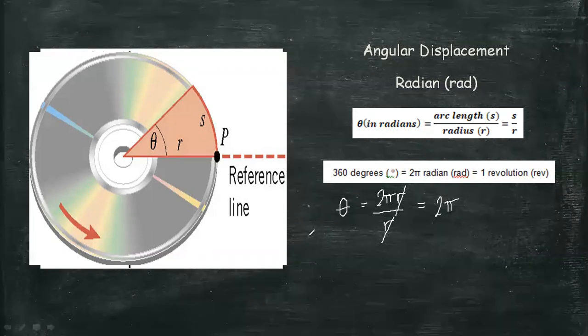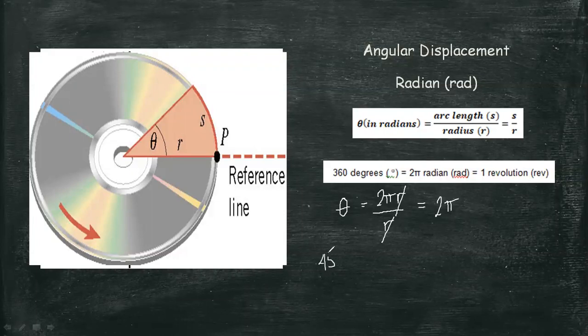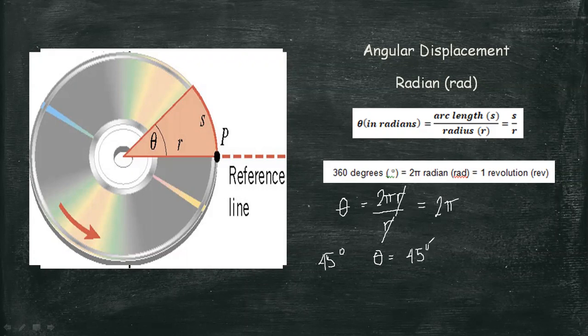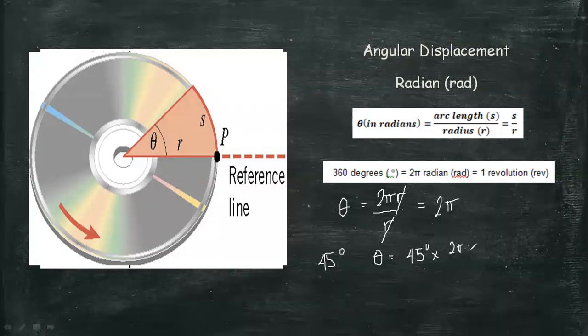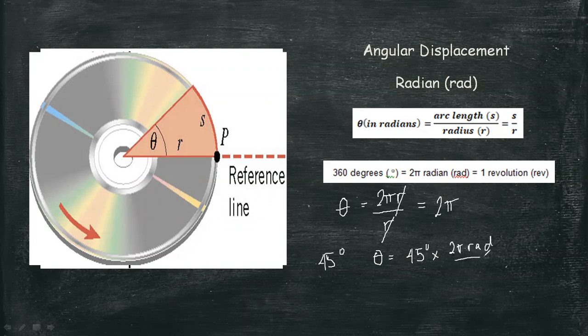Let's say if you want to convert 45 degrees into radians, then using our conversion of 360 degrees equals 2π radians, we can multiply 45 degrees with 2π radians divided by 360 degrees, which will give us π/4 radians.